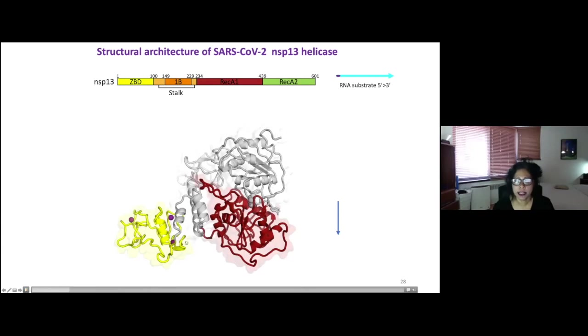So there's RecA1 domain. I mentioned there are two. RecA2 is going to come up now in green. And then they form a pocket for the nucleotide that needs to be hydrolyzed to provide the energy for the translocation activity. This is the ADP aluminum fluoride we actually see in our structure.